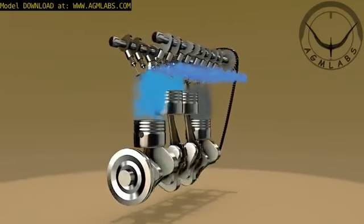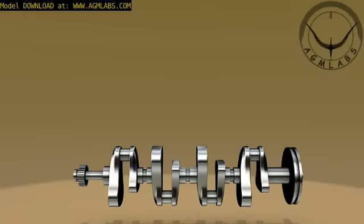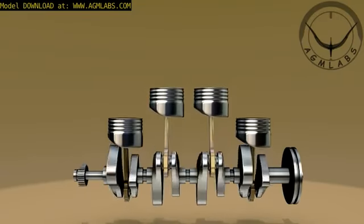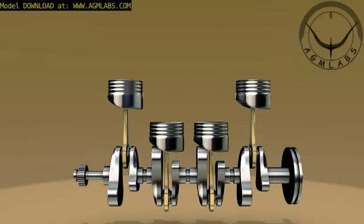Let's take a look at the basic internal parts of a four-stroke engine. Inside the engine block, there is a crankshaft. Piston rods are attached to the crankshaft, and pistons are attached to the piston rods. As the crankshaft turns, it causes each piston to move up and down.